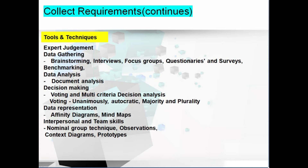Facilitated workshops allow stakeholders to develop user stories as part of workshops for specific requirements. Two types of tools used are Joint Application Design (JAD) and Quality Function Deployment (QFD). Multi-criteria decision analysis uses a decision matrix based on factors such as expected risk levels, time estimates, and cost-benefit estimates. We also have the observation technique, which is similar to job shadowing.